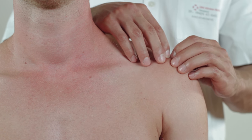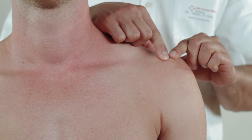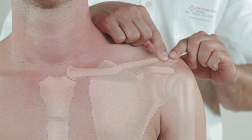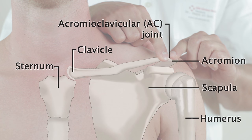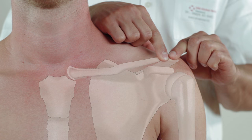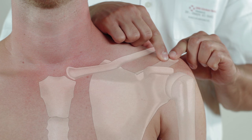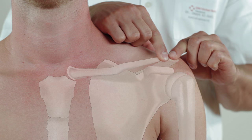Continue palpation along the clavicle to its lateral end, where the acromioclavicular joint is located. Watch out for any signs of a fracture, such as pain, swelling, or displacement. A lateral clavicle that is cranially dislocated and can be repositioned with minimal pressure is known as the piano key sign, which indicates injury to the AC joint.